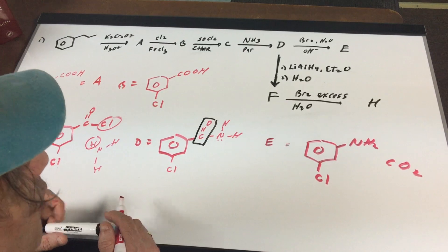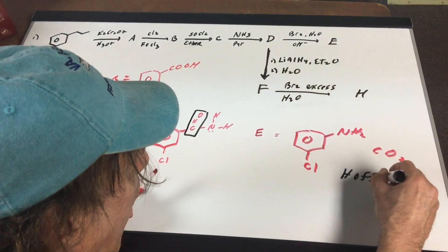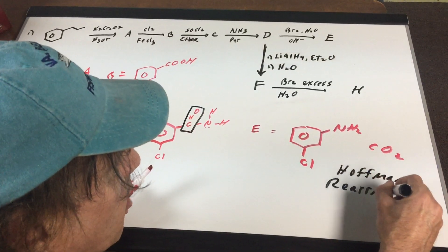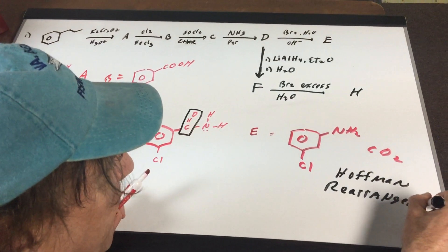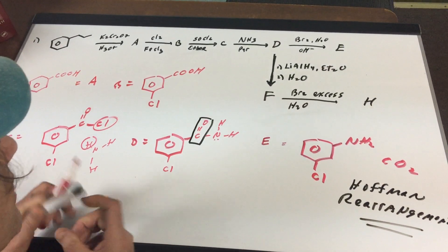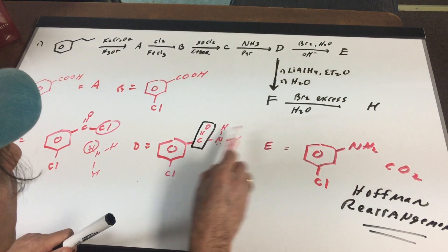In the meantime, if you want to go to any book and simply look up something called the Hoffman rearrangement, you would be able to see the details. But to cut through all the details for the DAT exam, you just remember, if you see an amine, an amide, it's got to have two H's on the end.